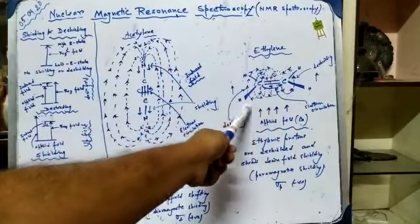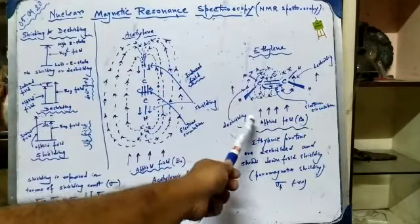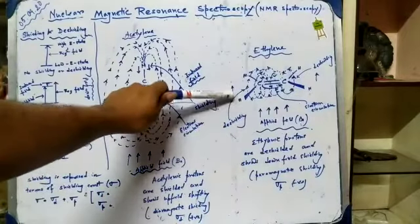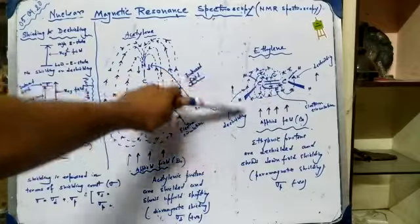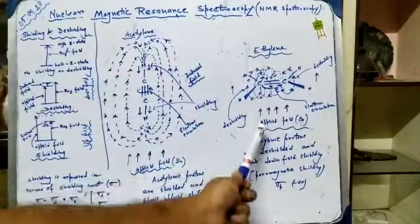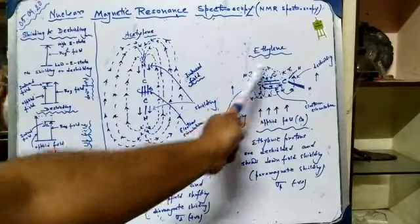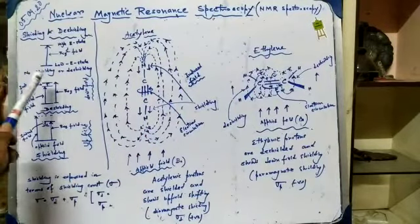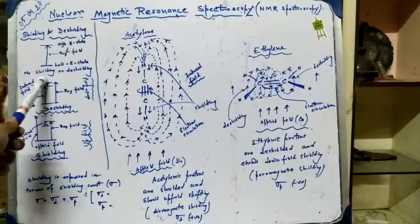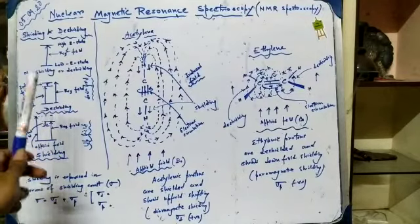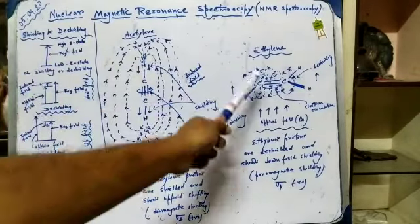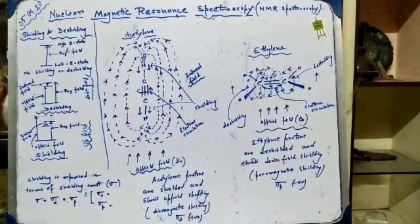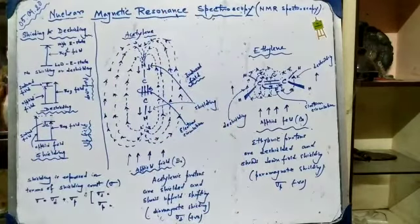The direction of the induced field is actually working in the same direction as the applied field here. So the direction of the applied field and the induced field are working in the same direction — this is the situation where the induced field and the required field work in the same direction. Therefore the applied field required to flip a proton will be less, because they are working in the same direction. That's why the ethylenic protons are called deshielded protons.